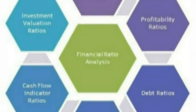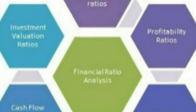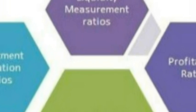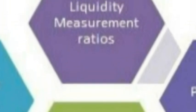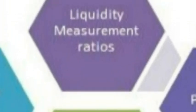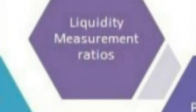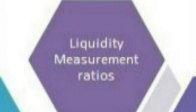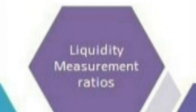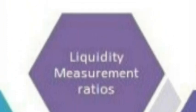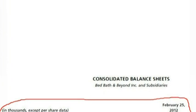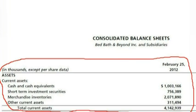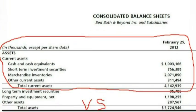The first set of ratios we're going to cover are known as liquidity measurement ratios. Liquidity measurement ratios attempt to measure a company's ability to pay off its short-term debt obligations if they were to come due. These measures do this by comparing a company's most liquid assets to its short-term liabilities.